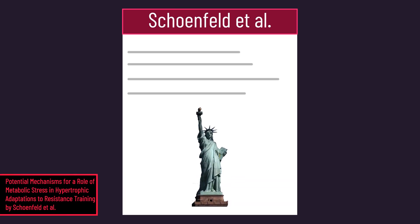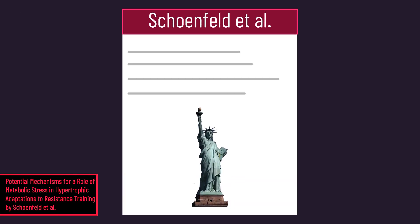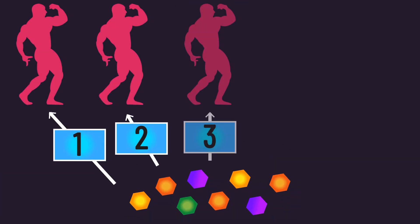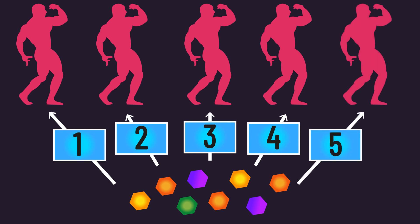In 2013, Brad Schoenfeld from New York published a comprehensive review of the potential paths by which metabolic stress could promote muscle growth. Five paths were noted.